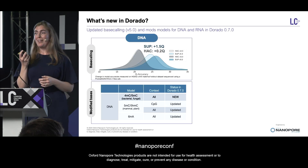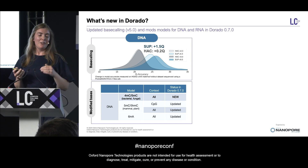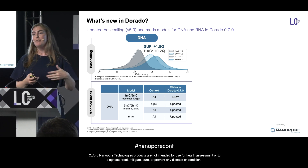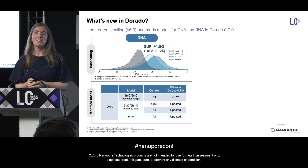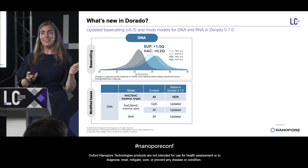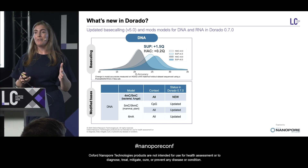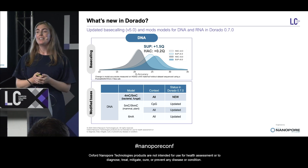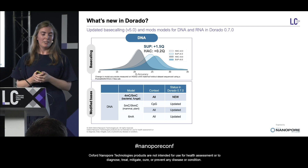Let's start with the new base calling models. These are our version 5 base calling models. We have a new base calling model architecture for our SUP models, which are our most computationally intensive but also most accurate models — Sam is going to talk about that in more detail. With this new architecture, we're seeing a really big accuracy bump: around 1.5Q accuracy improvement for the SUP model. In HAC, we also see some improvement with updates to our training data and architectures.